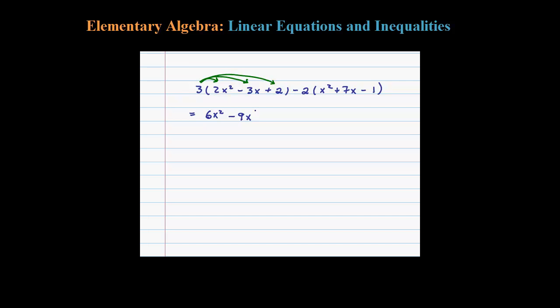And 3 times that 2 is plus 6. Now you want to be a little careful here—we're not just multiplying 2, we need to multiply everything inside there by negative 2. So negative 2 times x² is minus 2x².